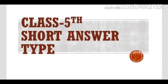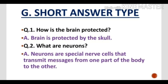Class 5 Short Answer Type Question Answer. Question No. 1: How is the brain protected? Children, you have to tell how your brain is protected. The brain is protected by the skull.